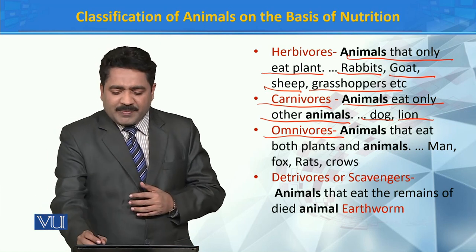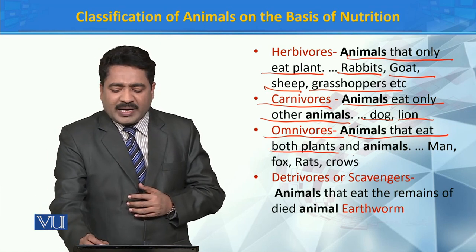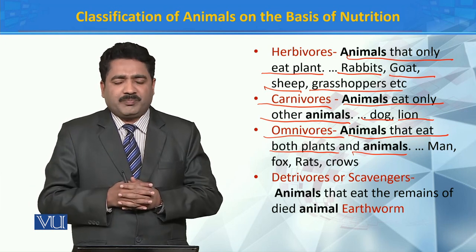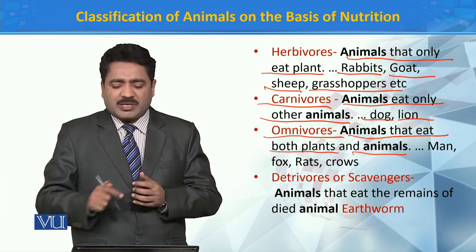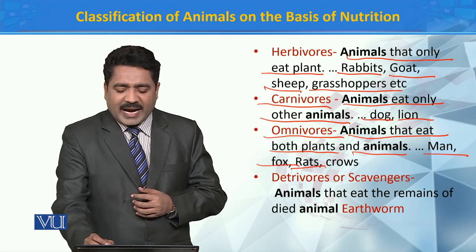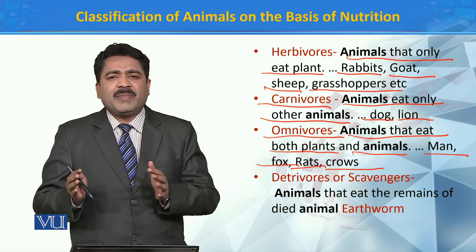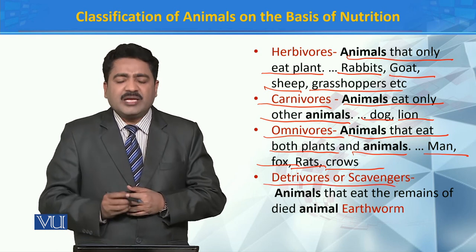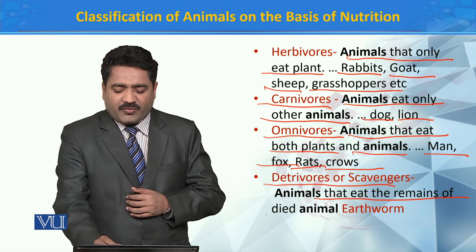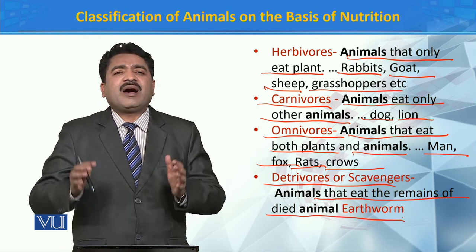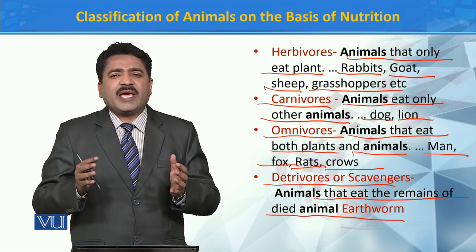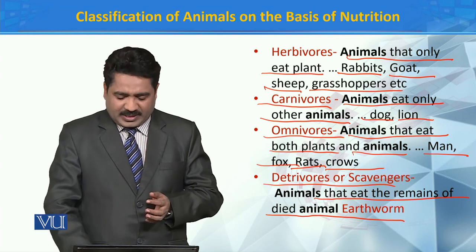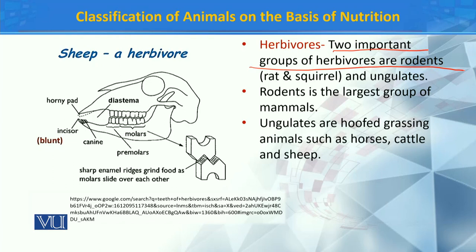Now if we talk about Omnivores, Omnivores are animals that eat both plants and animals — they eat plant matter as well as animal meat. And if we talk about Detritivores, Detritivores are animals that eat the remains of dead animals — they feed on dead matter, on the remnants left after animals die.